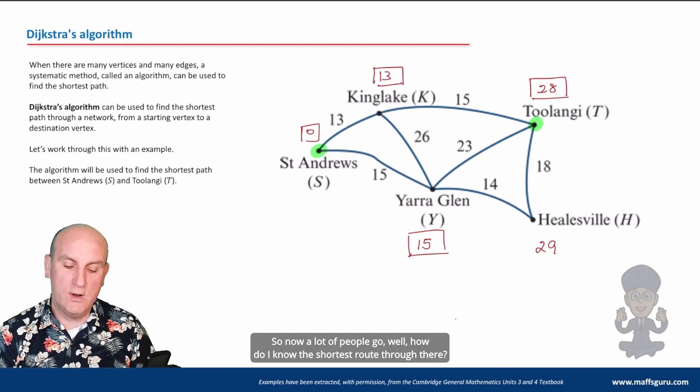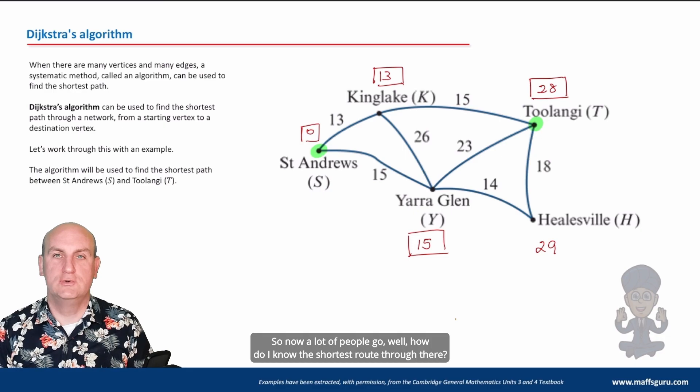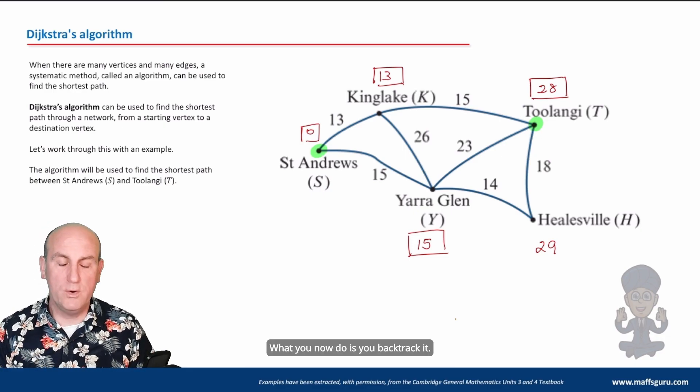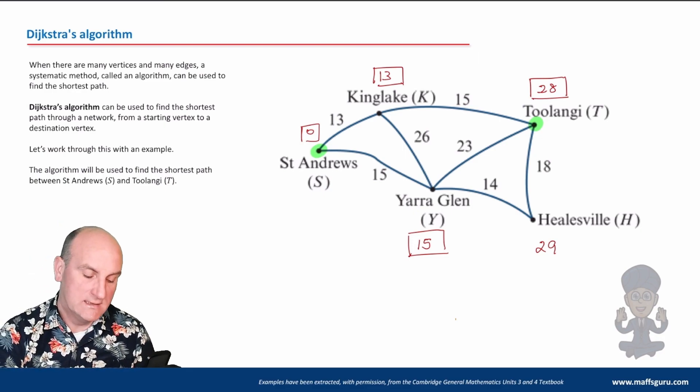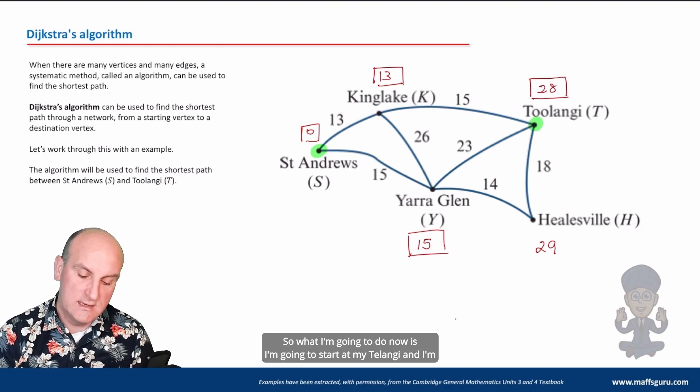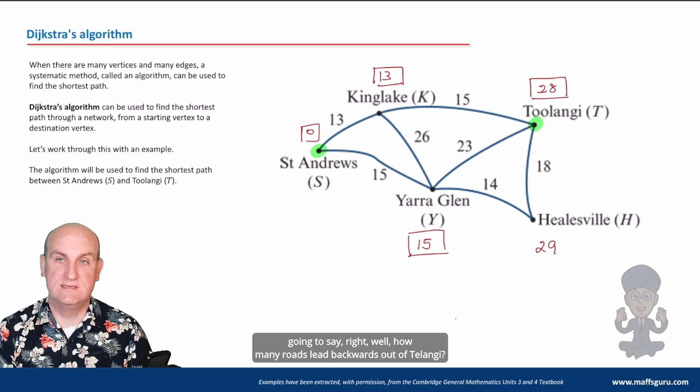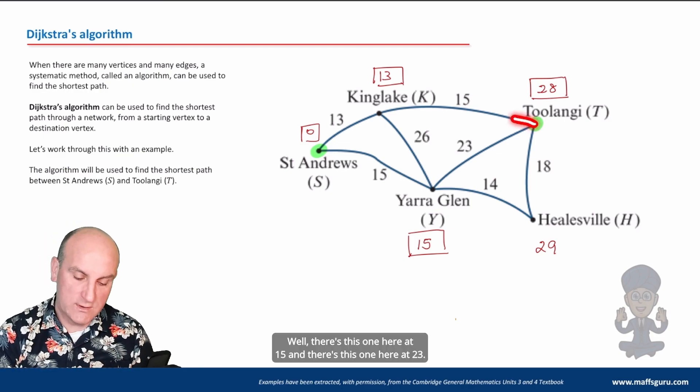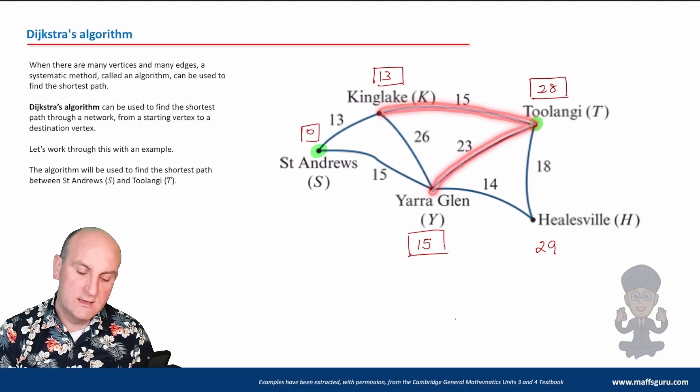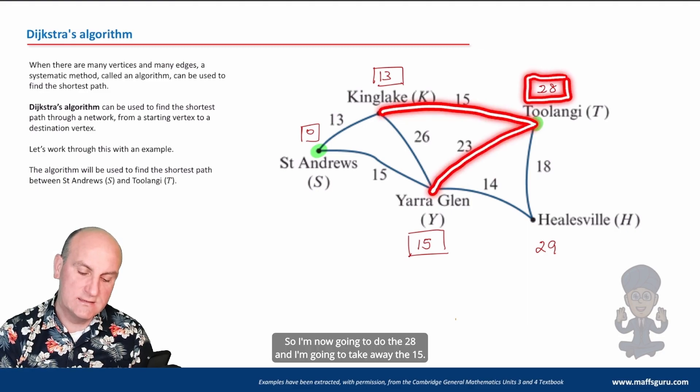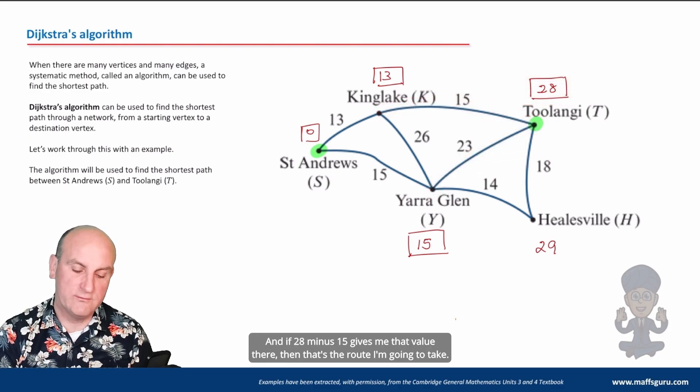Now, what did we say then? So now a lot of people go, well, how do I know the shortest route through there? What you now do is you backtrack it. So what I'm going to do now is I'm going to start at my Toolangi and I'm going to say, right, well, how many roads lead backwards out of Toolangi? Well, there's this one here at 15 and there's this one here at 23.